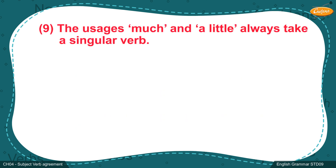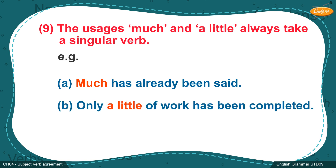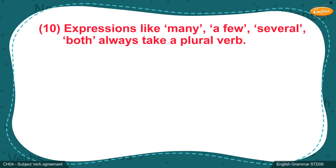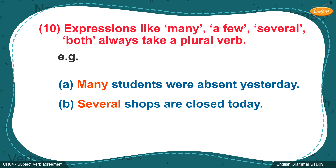Rule 9: The usages 'much' and 'a little' always take a singular verb. Example A: 'Much has already been said.' Example B: 'Only a little of work has been completed.' Rule 10: Expressions like 'many', 'a few', 'several', and 'both' always take a plural verb. Example A: 'Many students were absent yesterday.' Example B: 'Several shops are closed today.'